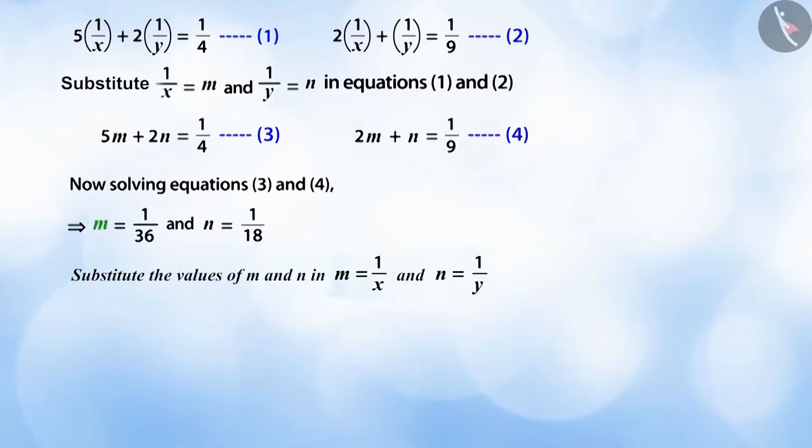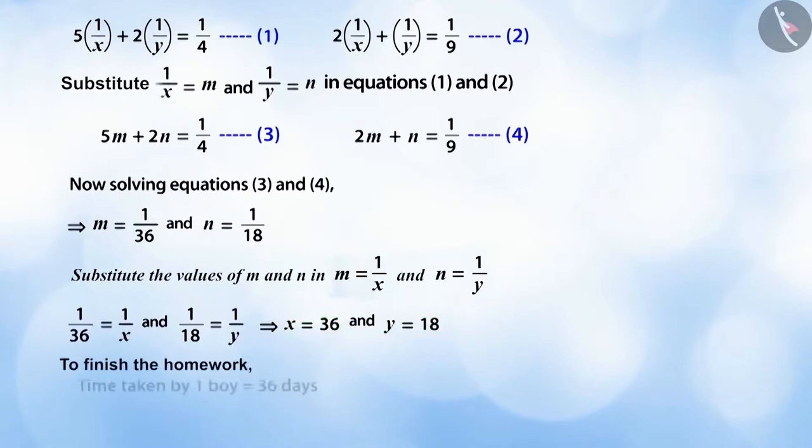So now when we replace 1/x as m and 1/y as n, we get x is equal to 36 and y is equal to 18. Therefore, to finish the homework, one boy will take 36 days and one girl will take 18 days.